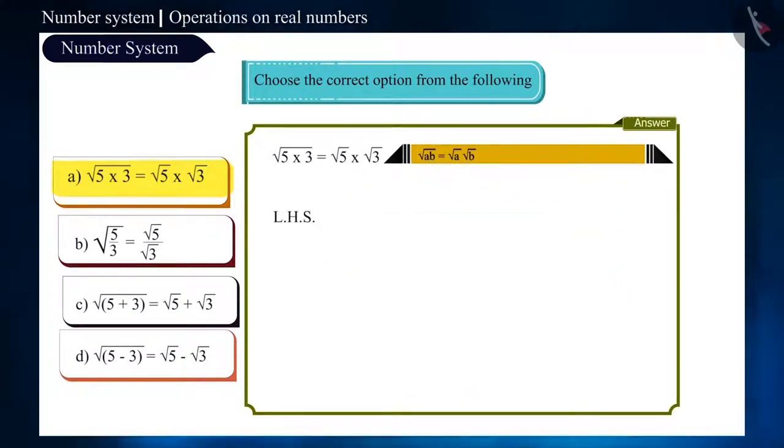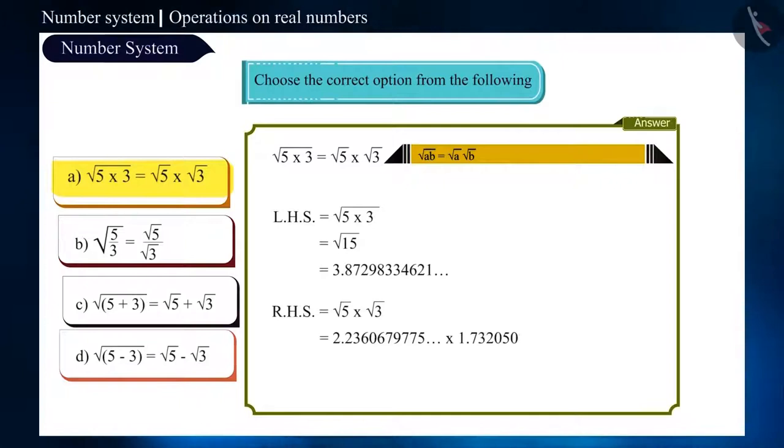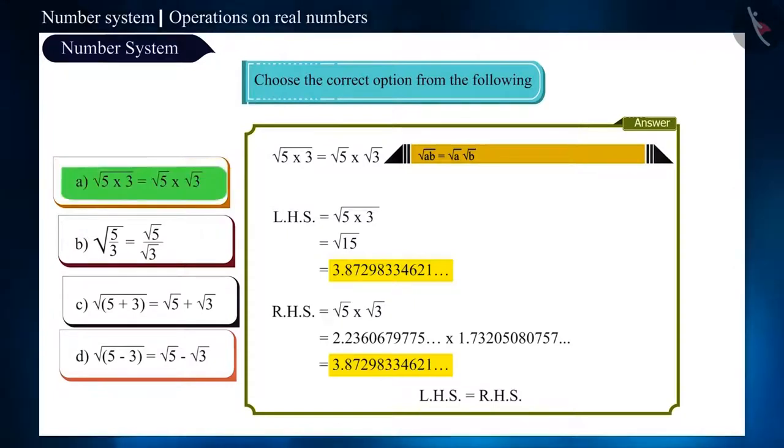Now, let's find their value and check. Here, the value of root of 15 is equal to root of 5 into root of 3. Therefore, this option is correct.